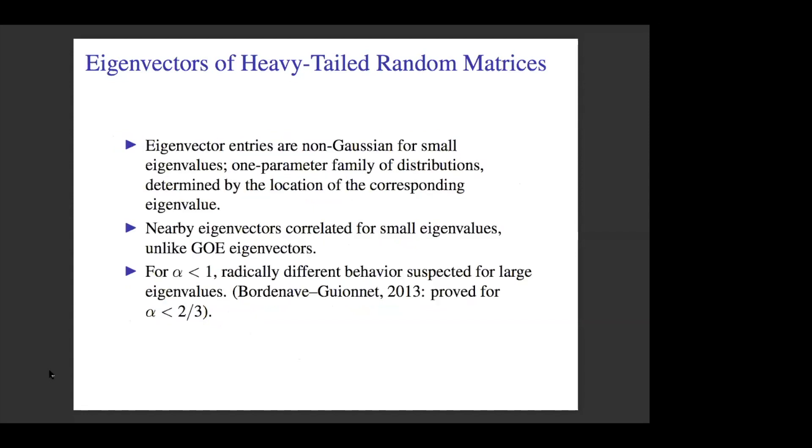Already we see something very different going on. In fact, you can say a bit more. For eigenvalues near zero, the entry distributions for the eigenvector entries are all Gaussian, but they're all different distributions - sort of a one-parameter family determined by where the eigenvalue is located near zero. I didn't say this for the GOE, but all the eigenvector entries are uncorrelated. Here you see correlations, and again, this is different. When alpha is less than one, in the case of infinite mean, you have radical behavior in the eigenvectors far away from zero for high energies.